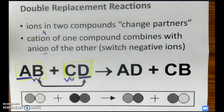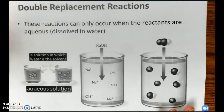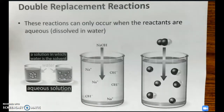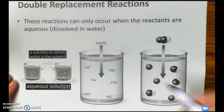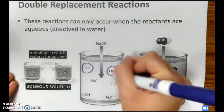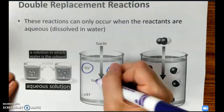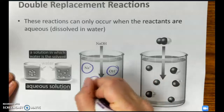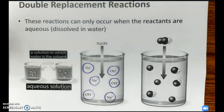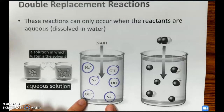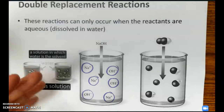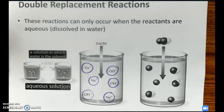That's a double replacement reaction — two compounds swapping partners. Now, these reactions can only occur if your reactants are aqueous, which means they are dissolved in water. Sodium hydroxide, NaOH, is aqueous — it dissolves in water. The cation and anions are separated. Your reactants must be aqueous for these reactions to occur because the ions have to be apart and moving, with enough energy to react. If you add two solids, atoms don't really move, so they're not going to react.